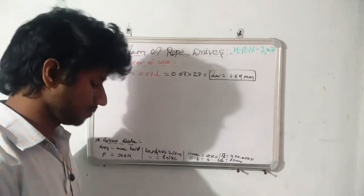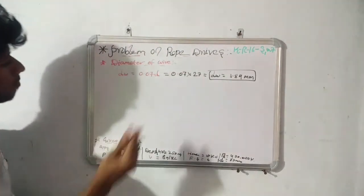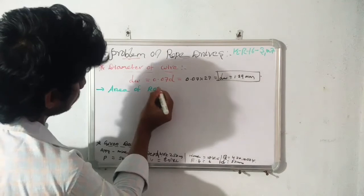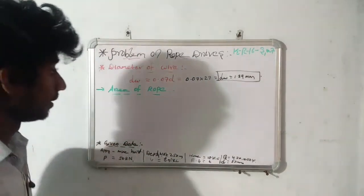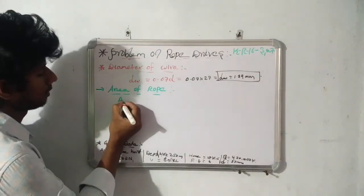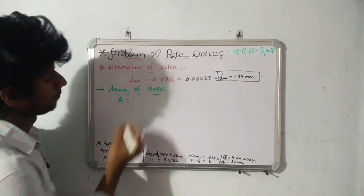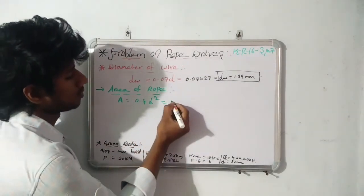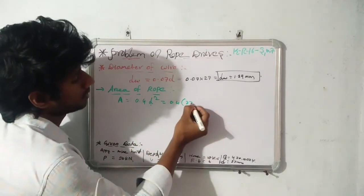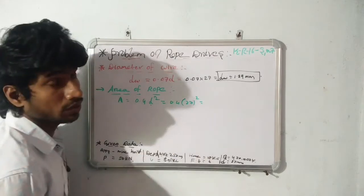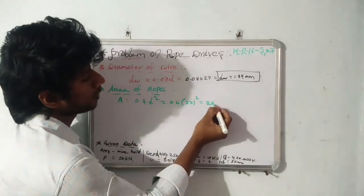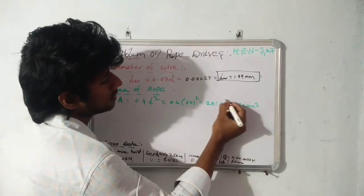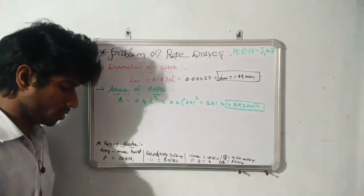Next, find the area of rope, denoted by A. From the table, A = 0.4d². Substituting d = 27 mm, A = 0.4 × 27² = 0.4 × 729 ≈ 291.7 mm². So consider it as 292 mm². This is about the area of the rope.